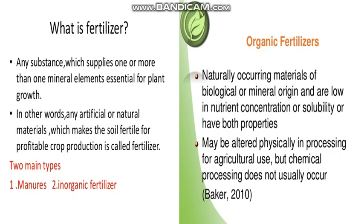First of all I will tell you about organic fertilizers. Naturally occurring materials of biological or mineral origin are low in nutrient concentration or solubility, or have both properties. Manure — meaning animal waste — compost, decaying plants, dried blood and bones are organic fertilizers because they are made from the bodies of living organisms. Organic fertilizers are made up of animal waste, plant waste, and dry bones of animals. These organic substances have to be broken down by the action of microorganisms to release the important minerals present in them.